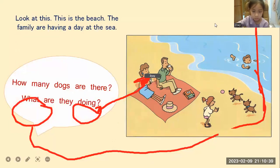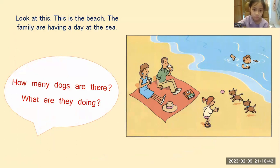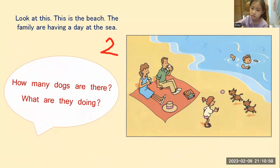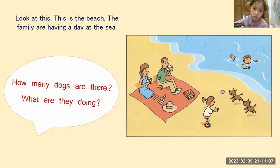So now, how many dogs are there? Dogs? Yes. It's two, there are two. Two. You say there are two dogs. Very good. What are they doing? The dog is playing the ball. Very good. You say the dogs are playing the ball. Very good, Zoe.